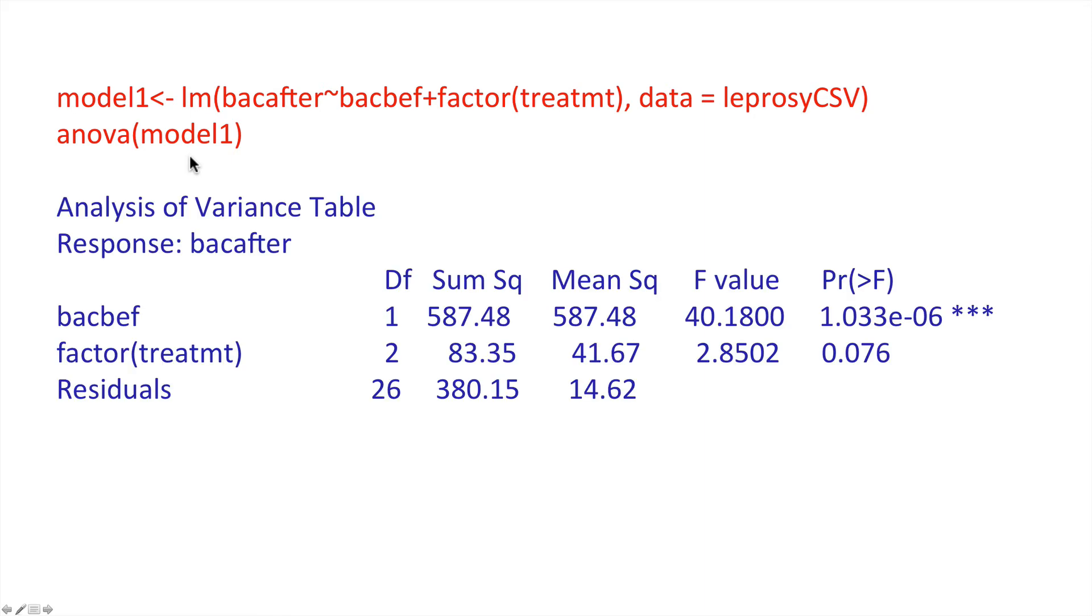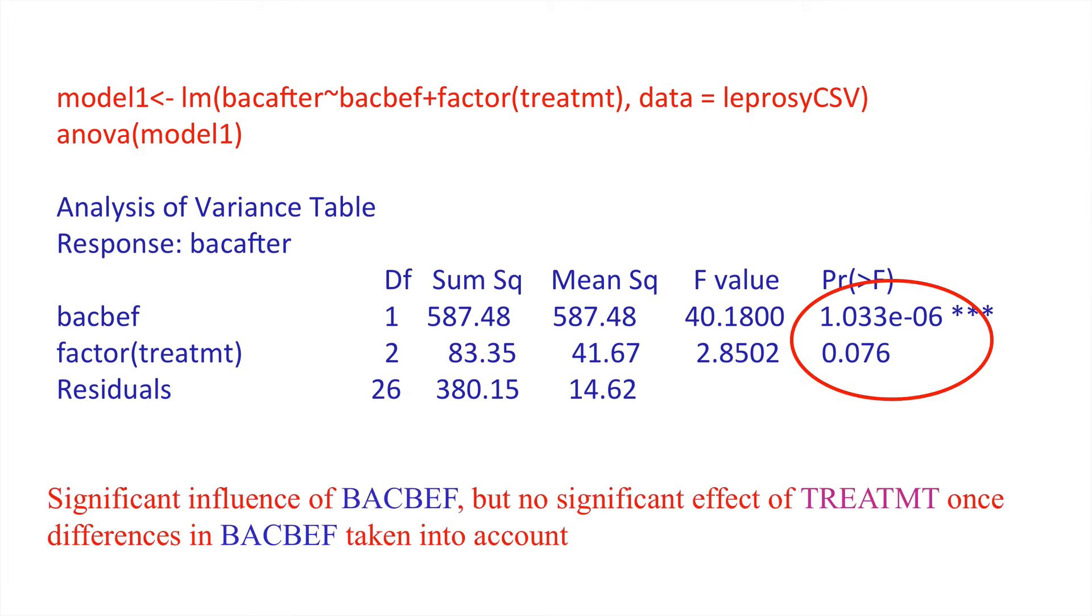This is what the output is of a fitted general linear model. We can see two things. The first is that the bacillus before explains a high degree of variability in the bacillus after in that we have a highly significant effect of bacillus before on bacillus after.